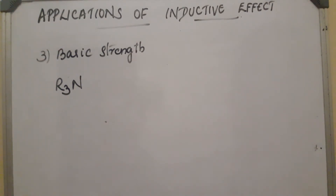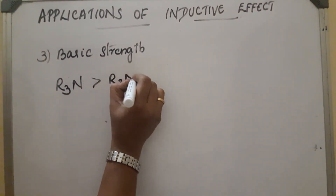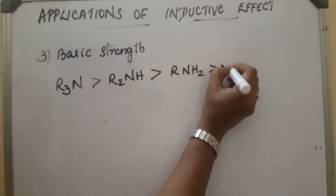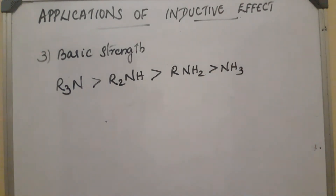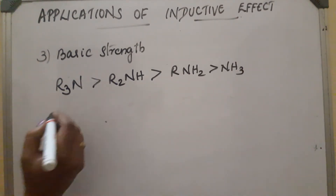As plus-I effect increases, basic strength increases. The order is: R3N > R2NH > RNH2 > NH3. The nitrogen contains a lone pair of electrons and can donate them — they are highly basic. Basic strength increases as the plus-I effect increases.